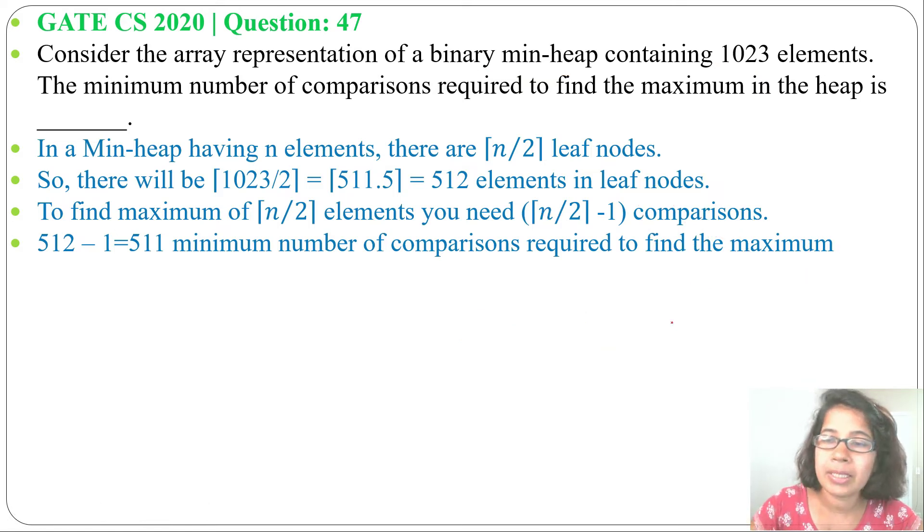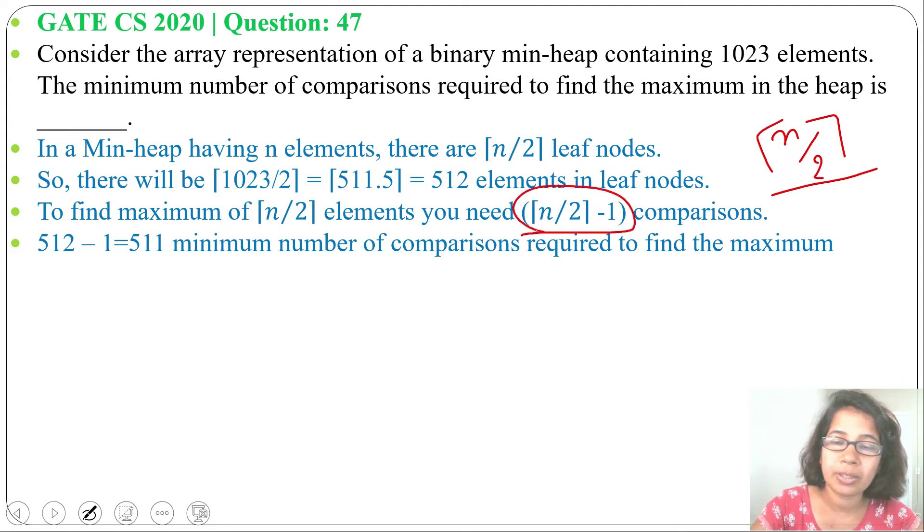So, if there are n elements, n divided 2, ceiling function that many leaves are there. For n divided 2 upper bound, there will be n divided 2 minus 1 comparison. So, 1023 divided 2 ceiling function minus 1, that will be 511. Answer will be 511.